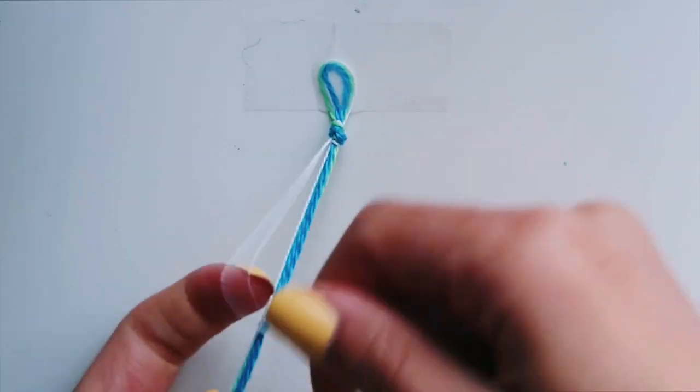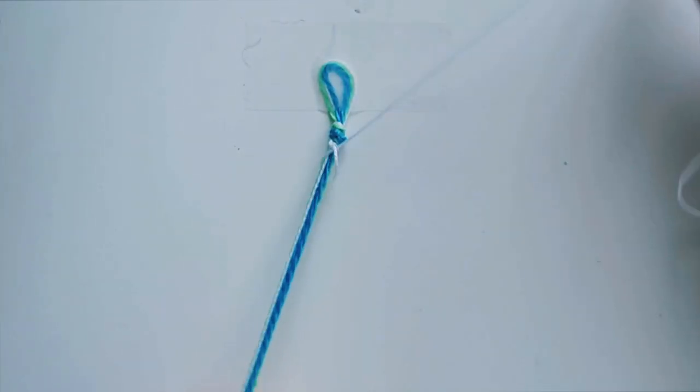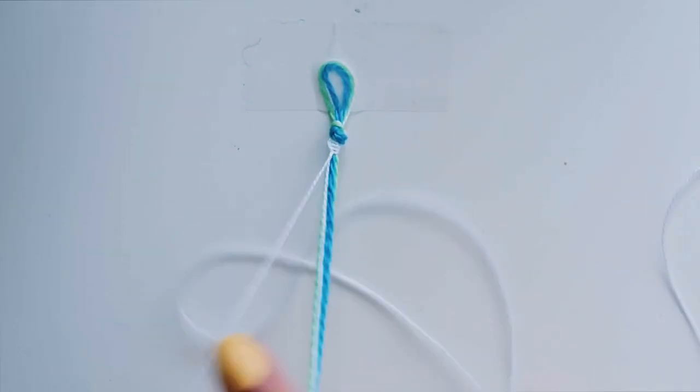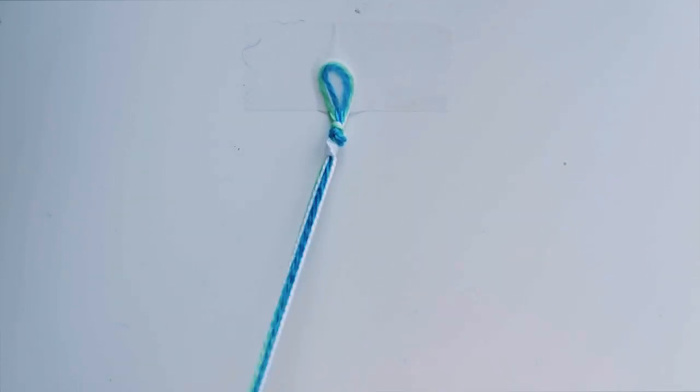Over and over again with the same white string. And basically, what's gonna happen, once you start doing that many, many times, and since I've done this a lot, I can do it pretty quick, but once you've done that a lot, on its own it starts to create this little spiral around here that actually looks really, really cool.